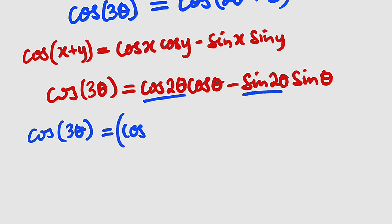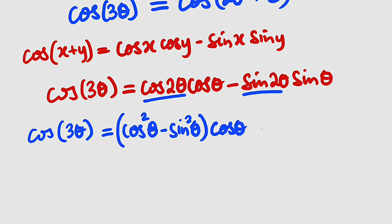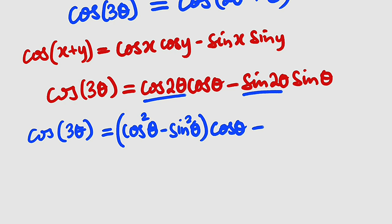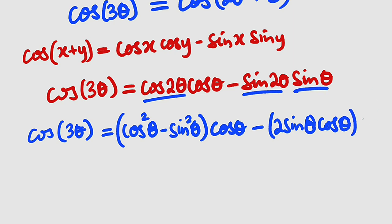So we have cosine squared theta minus sine squared theta, multiplied by cosine theta outside. For sine of 2 theta, it is the same thing as 2 sine theta cosine theta. Then you multiply by sine theta, which is outside.